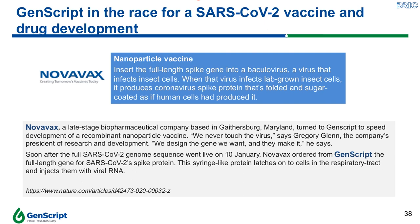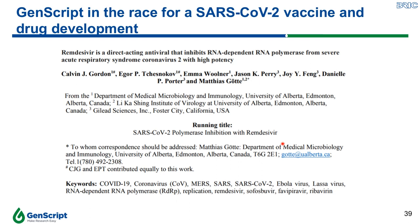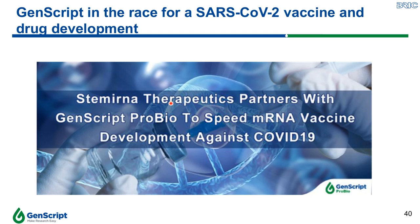Recently, another article published by Gilead in JBC Press described that Remdesivir could potentially be used to treat the disease. Remdesivir can block the replication mechanisms of COVID-19 by limiting the building blocks that fool the RNA-dependent RNA polymerase. In this study, Gilead utilized SARS-CoV-2 related materials provided by GenScript. Additionally, a new partnership was formed between Cermina Therapeutics and GenScript to speed up mRNA vaccine development against COVID-19.